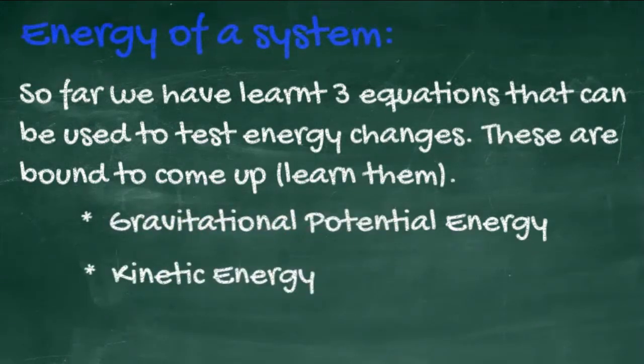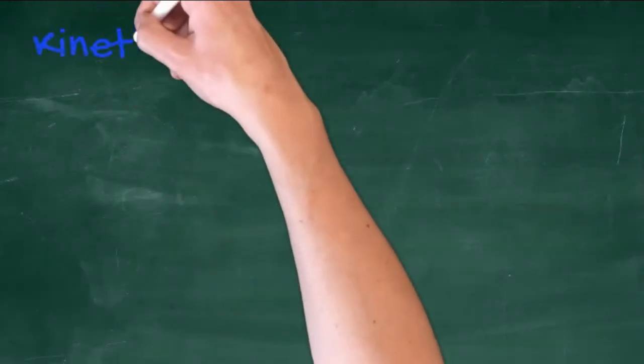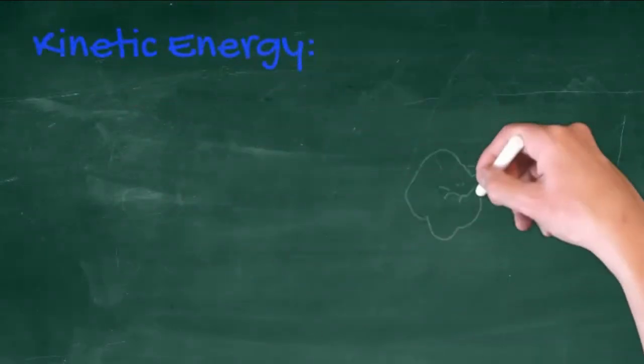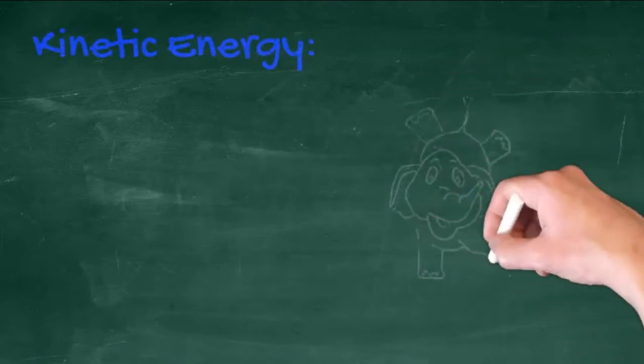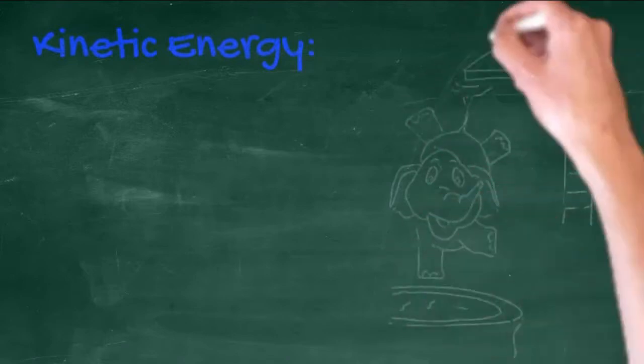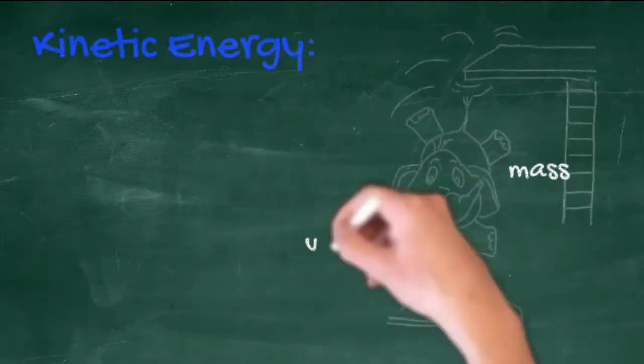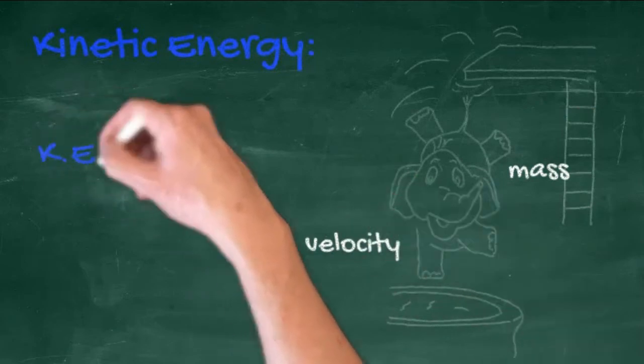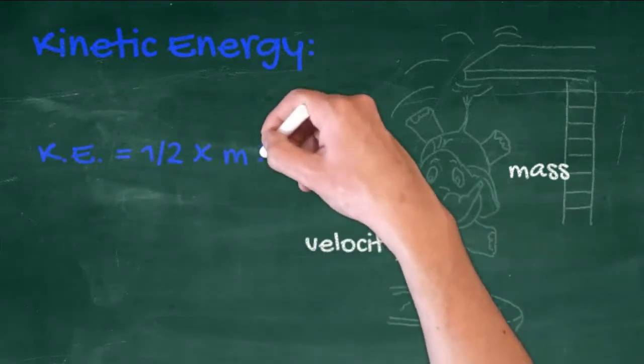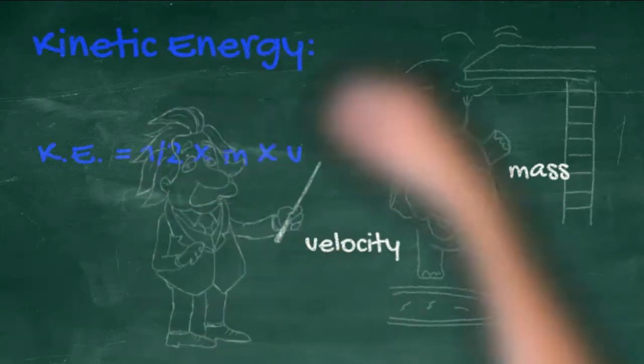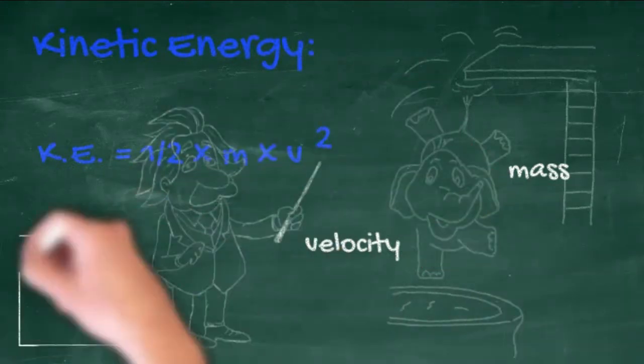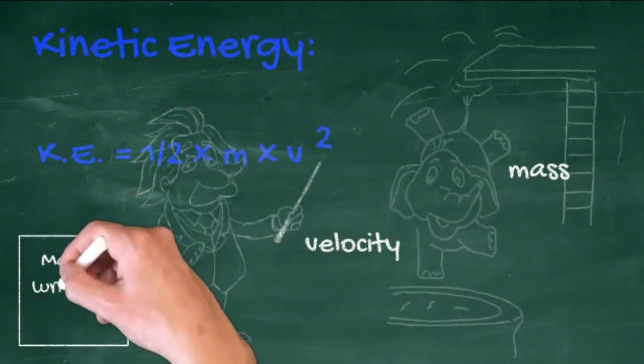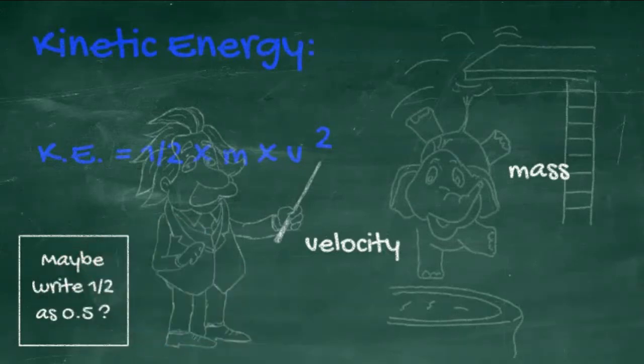The second equation we have learnt is the one for kinetic energy. Kinetic energy is basically the energy due to movement. Kinetic energy equals a half times mass times velocity squared. And velocity, of course, is speed in a given direction. It is the V squared that is forgotten most often.